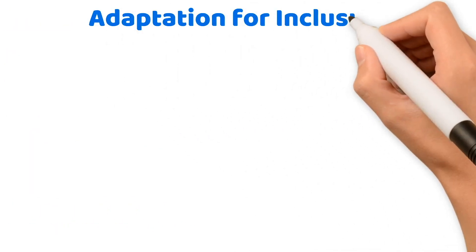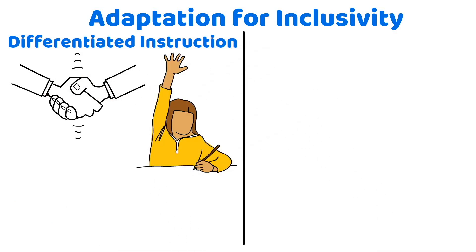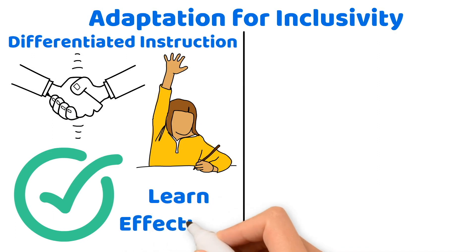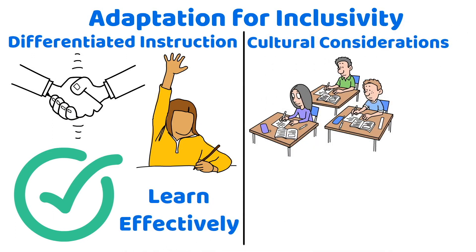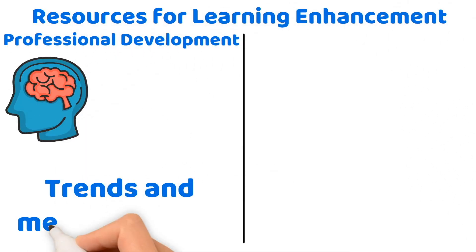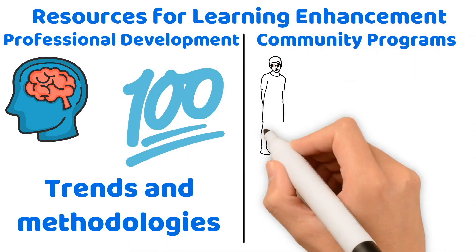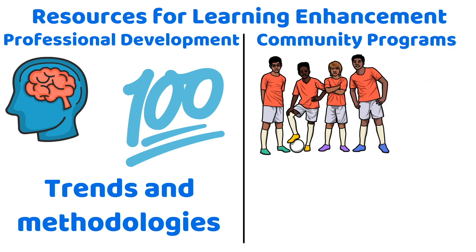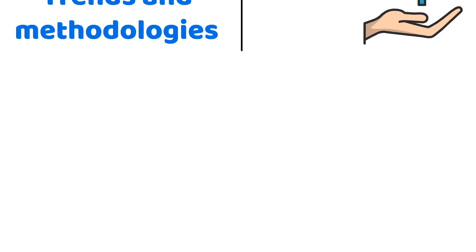Adaptation for inclusivity: use differentiated instruction to tailor activities to meet the diverse needs of all students, ensuring everyone can participate and learn effectively. Integrate culturally diverse activities to engage students from different backgrounds and broaden the educational scope. Stay updated with the latest trends and methodologies in physical education, and leverage partnerships with local sports teams and health organizations to bring additional resources and real-world relevance to your lessons.